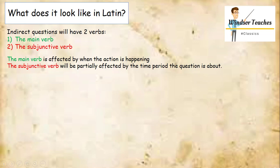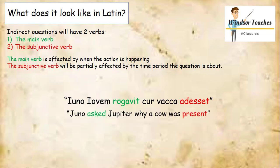Let's also look at another example now. Iuno Iovem rogavit cur vacca adesset, which means, Juno asked Jupiter why a cow was present. So for this sentence I'm thinking about the Jupiter-Io story, where Jupiter supposedly sees Io walking in the woods, rushes over to her, she tries to escape, and he catches her easily. So another key thing is that Jupiter also cloaks the entire earth in cloud, making it all more obvious to Juno that he's having one of his many extramarital affairs.